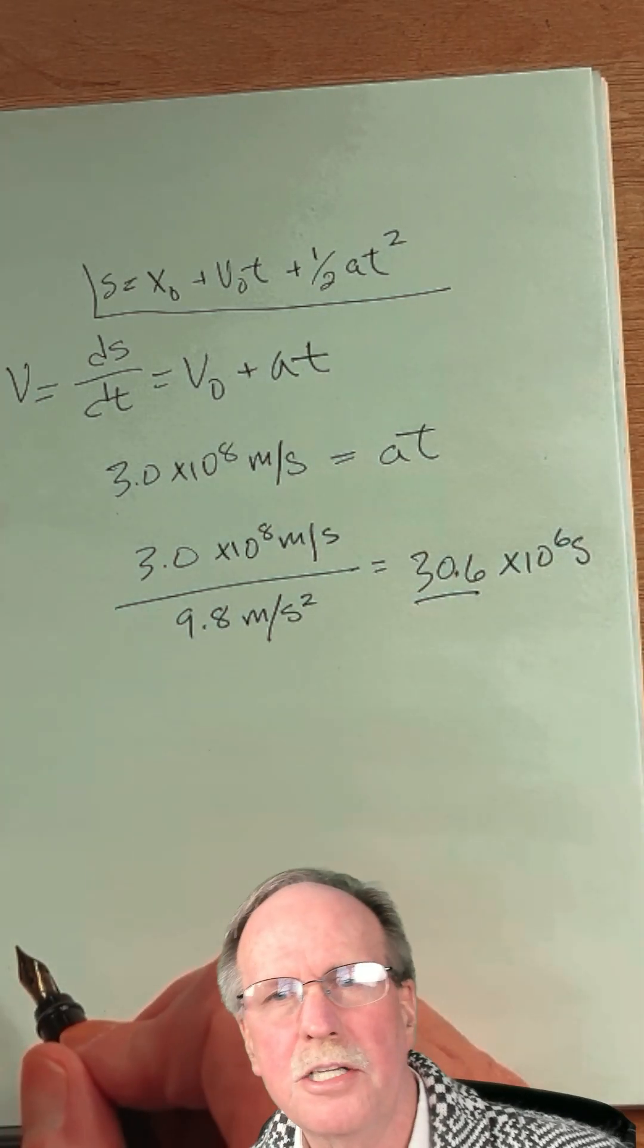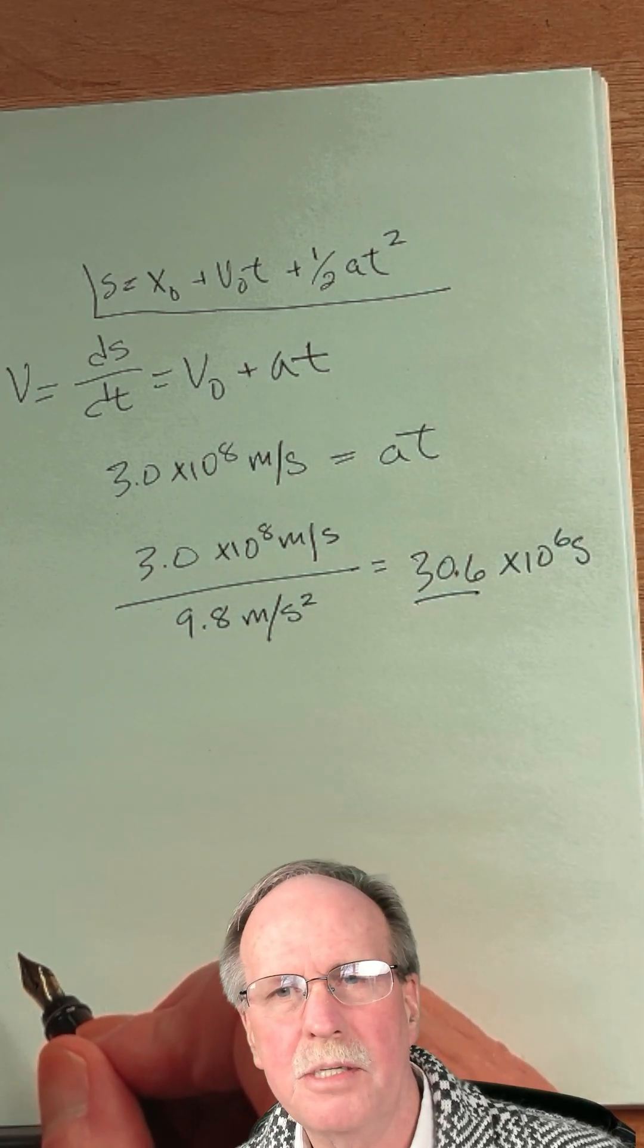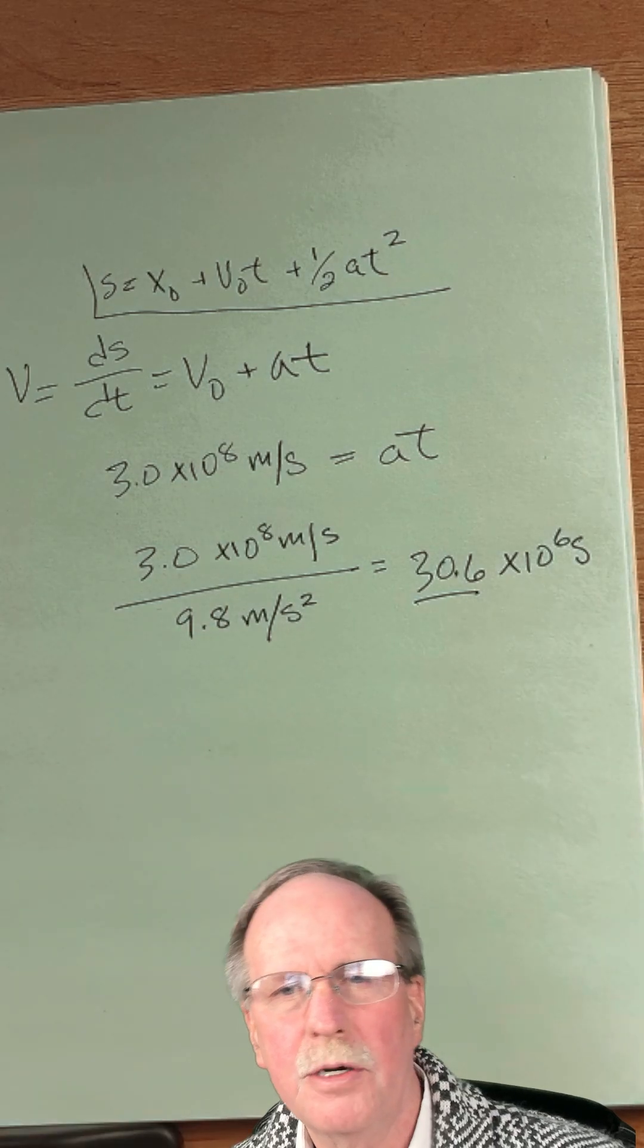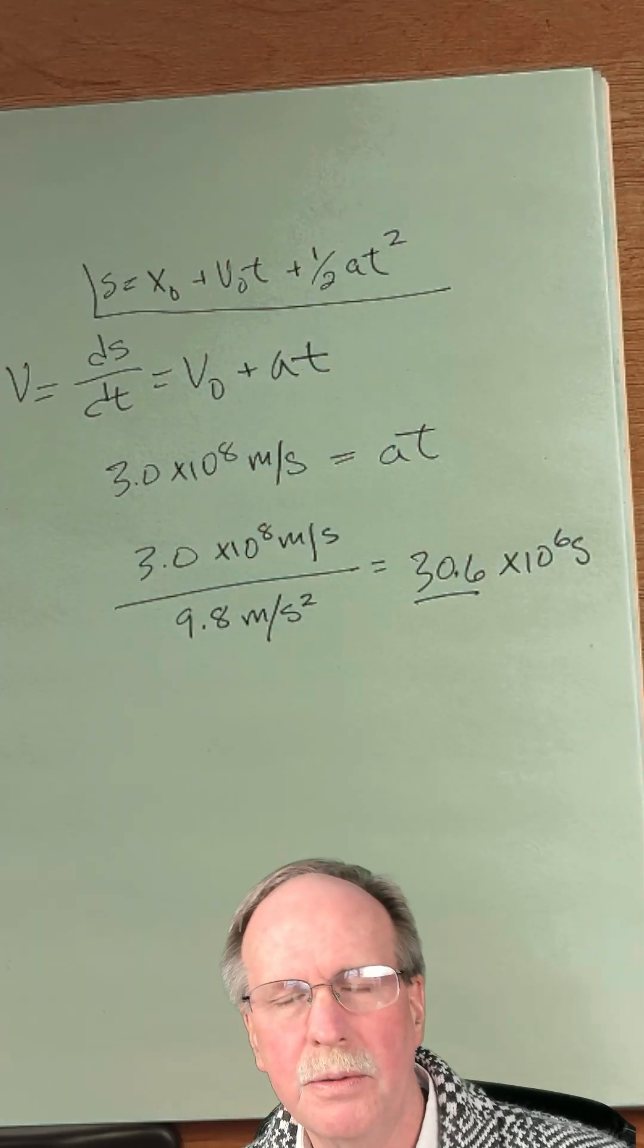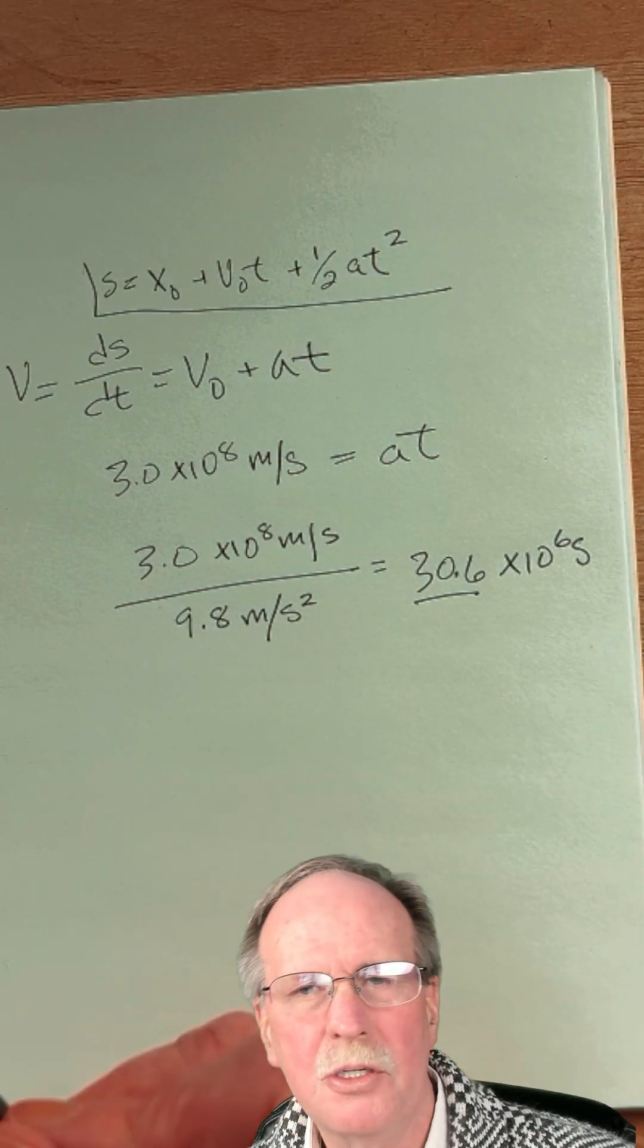Now it's kind of interesting because 30.6 just so happens to be the number of earth diameters from the center of the earth to the moon. What's that mean? Absolutely nothing. Complete coincidence. So how long is this?